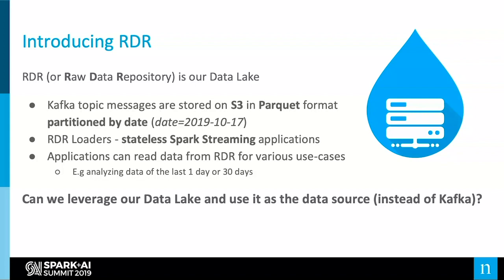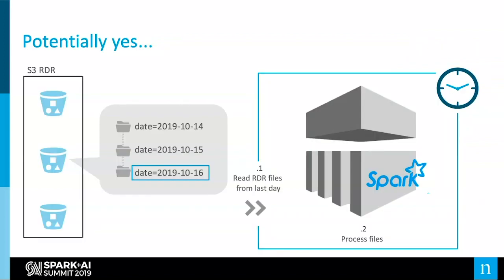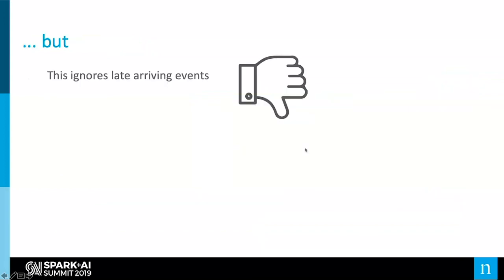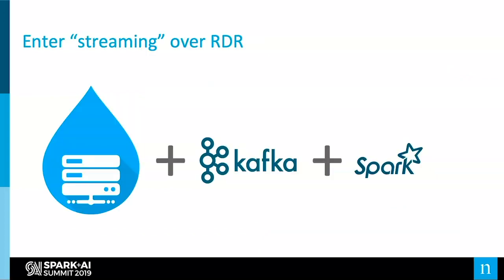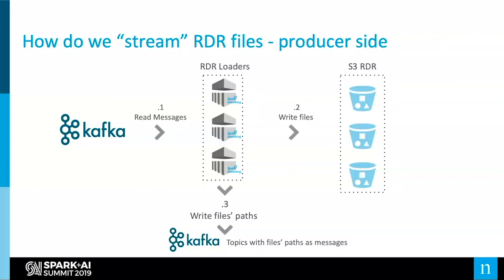From there, we have applications that can read the data from our data lake for various use cases. A common use case is an application that reads or analyzes the data for the last day or the last 30 days. The question is: can we leverage our data lake and use it as our data source instead of Kafka? Potentially yes. Say we are on October 17th today — I can run a Spark batch application, read the folder of yesterday, October 16th, and process the data as I'd like. However, that ignores late-arriving events. So enter streaming over our RDR — we combine our data lake, Kafka, and Spark to introduce this rather unique solution.